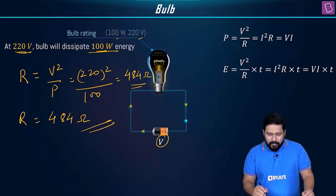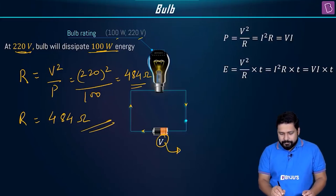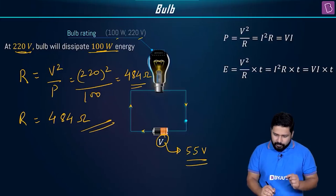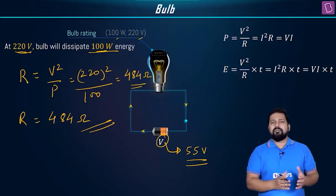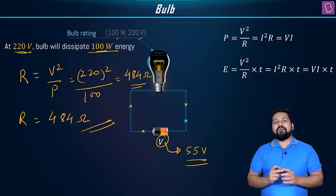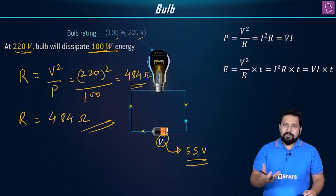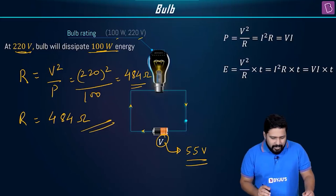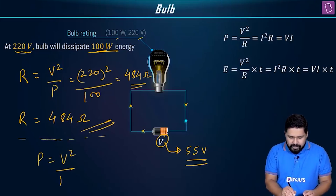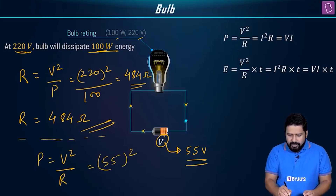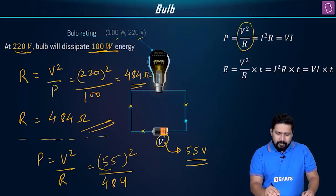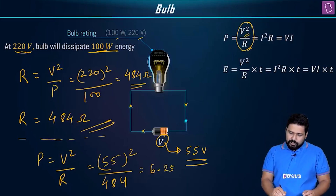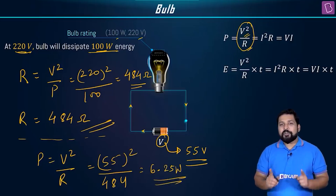In the second case, we connect the bulb across 55 volts. The question is: what is the power dissipated? Using P = V²/R = 55² / 484, we get 6.25 watts. So the bulb dissipates only 6.25 joules per second instead of 100.